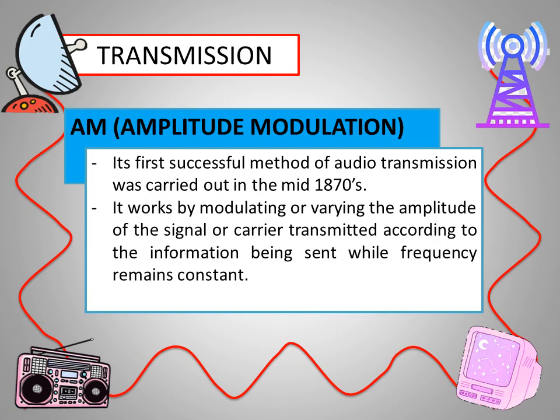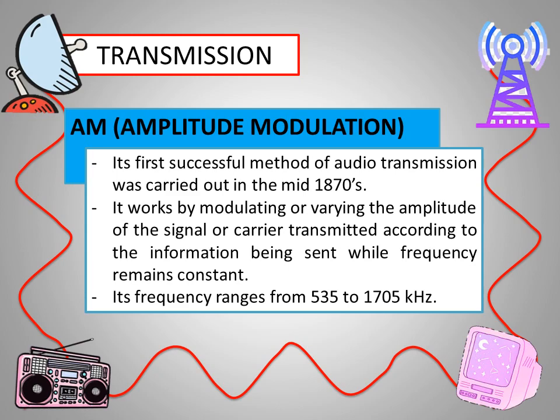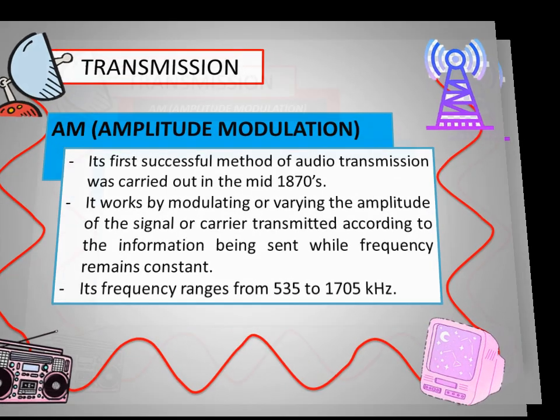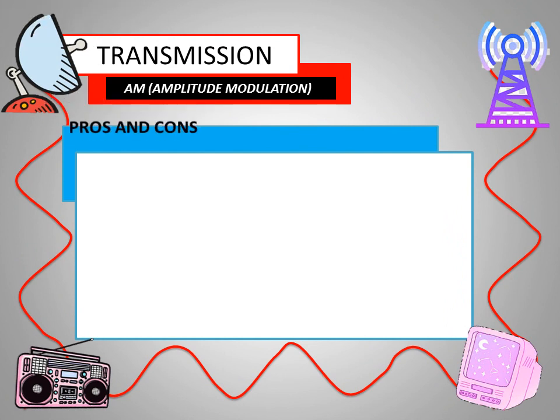AM works by modulating or varying the amplitude of the signal or the carrier transmitted according to the information being sent, while frequency remains constant. Its frequency ranges from 535 to 1,705 kHz. What are the pros or advantages and the cons or disadvantages of amplitude modulation transmission?